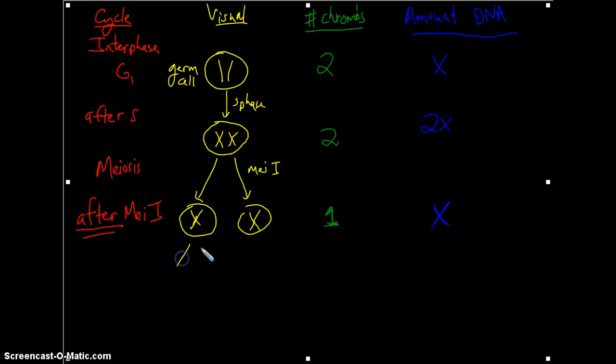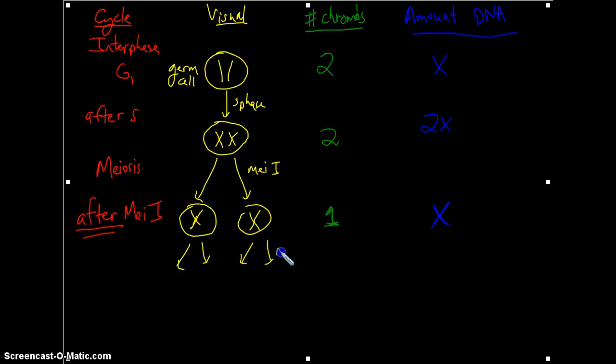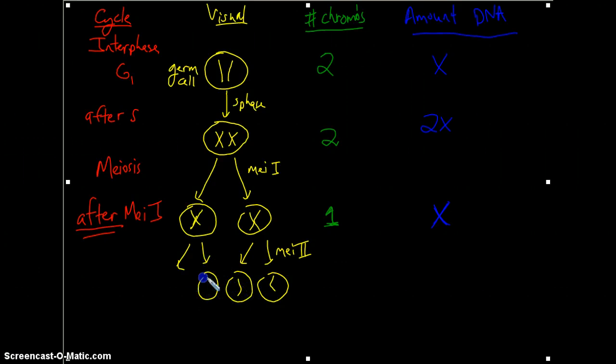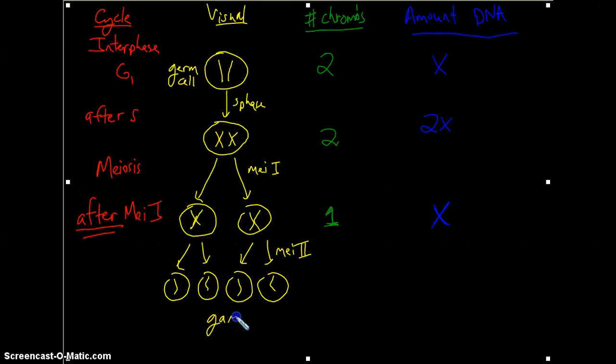So let's go through meiosis II now. And separate these sister chromatids. So now, after meiosis II, we wind up with four haploid gametes. We've got the gametes, we have the egg and sperm, and we're ready for fertilization.